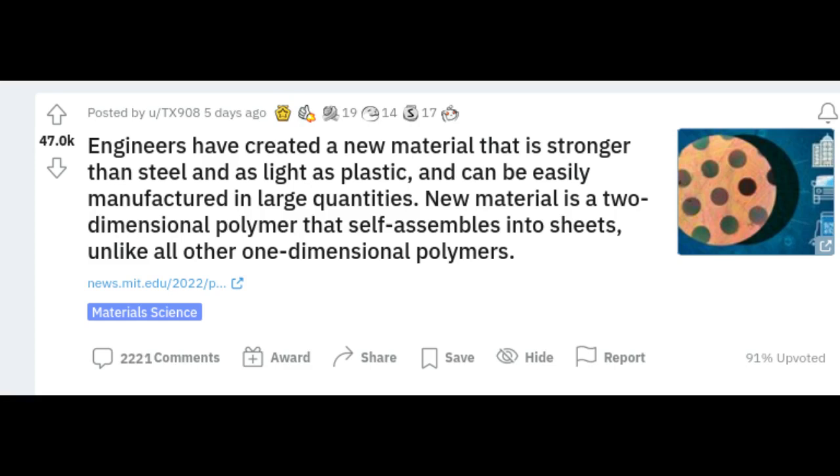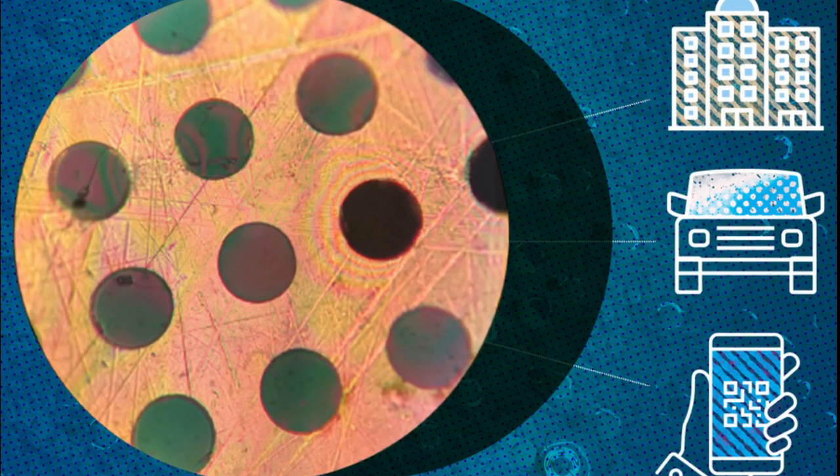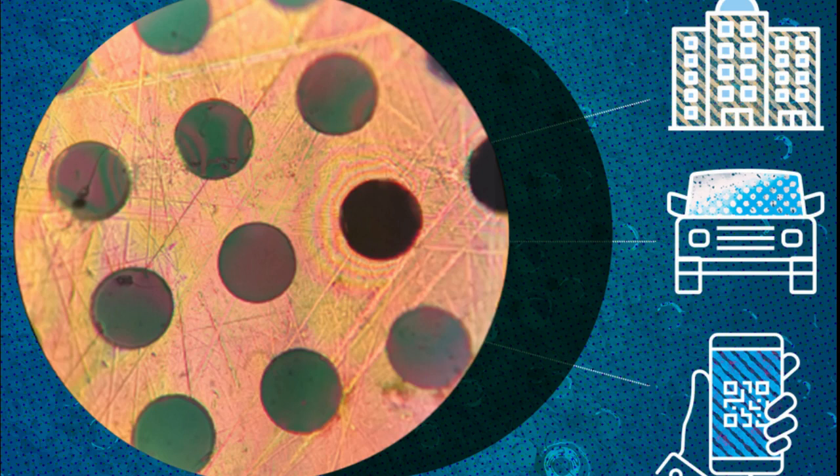Under the right conditions, these monomers can grow in two dimensions, forming discs. These discs stack on top of each other and are held together by hydrogen bonds between the layers, which make the structure very stable and strong. Because the material self-assembles in solution, it can be made in large quantities by simply increasing the quantity of the starting materials.